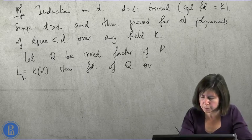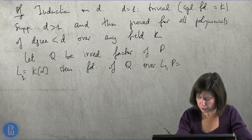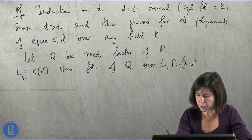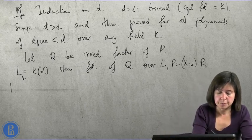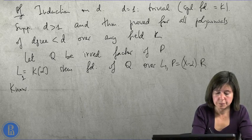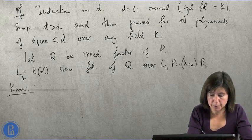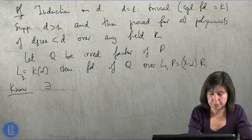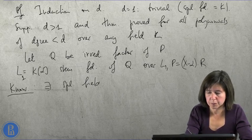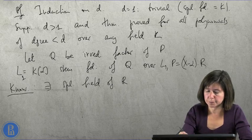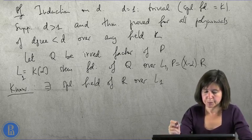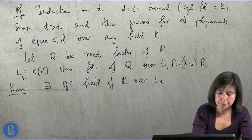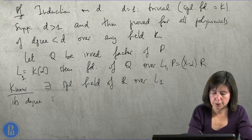k of alpha is a stem field of q. So, over L1, we have p is x minus alpha times r.